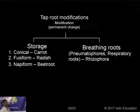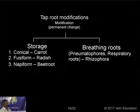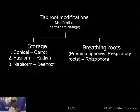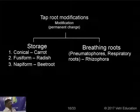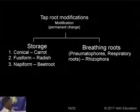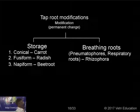The first tap root modification: the roots store food material and become swollen. These are called storage modifications. Depending upon the shape, they can be conical, fusiform, or napiform. Another tap root modification is breathing roots — also called pneumatophores or respiratory roots. You can find these in plants growing in marshy areas.